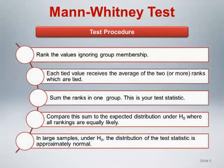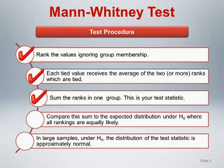Here is the general test procedure for calculating the Mann-Whitney test statistic, which the p-value is based on. Rank the values ignoring group membership — simply list all of the values in both samples and organize them in ascending order. Each tied value receives the average of the two or more ranks which are tied. Now sum the ranks in either one of the two groups; this is your test statistic. Compare this sum to the expected distribution under the null hypothesis, where all possible rankings are equally likely.